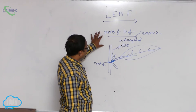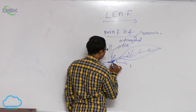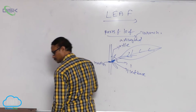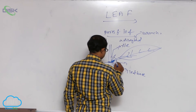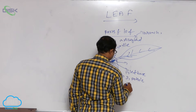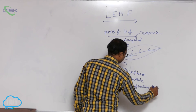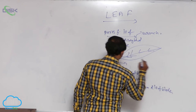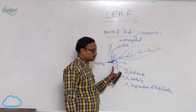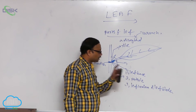So, parts of the leaf: a leaf mainly has three parts. The first one is the leaf base. The second is the petiole. The third is the leaf lamina, or leaf blade. The leaf is attached to the stem at the node by its base, and that is known as the leaf base.